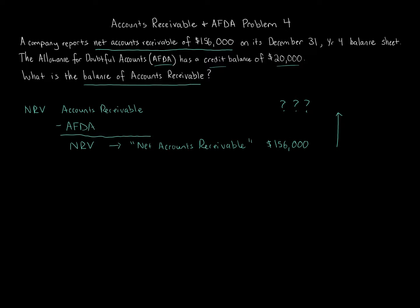What kind of account is AFDA? AFDA is a contra asset. Contra just means opposite. Whenever we have debits and credit balances — in my accounting basics videos I like to focus on the horizontal method, while many faculty focus on journal entries. The accounting equation — assets equals liabilities plus owner's equity — is the central focus of accounting. With the journal entry approach, debits and credits are extremely important.